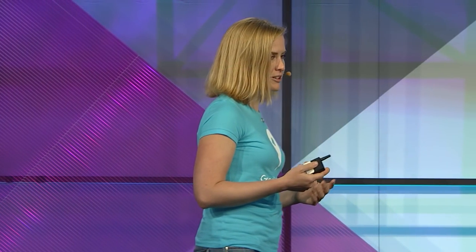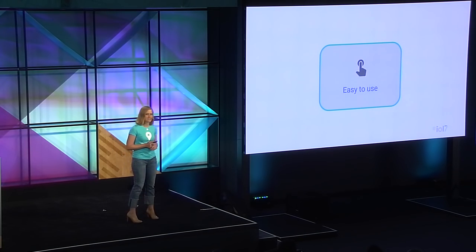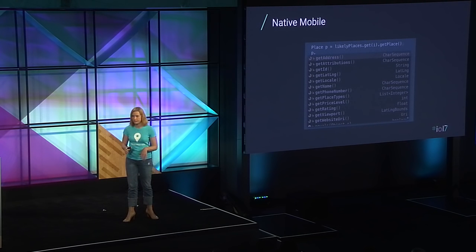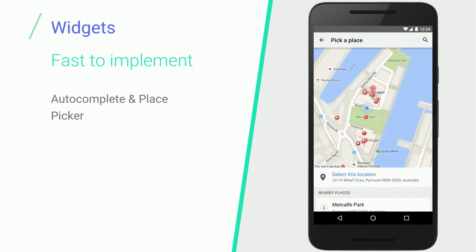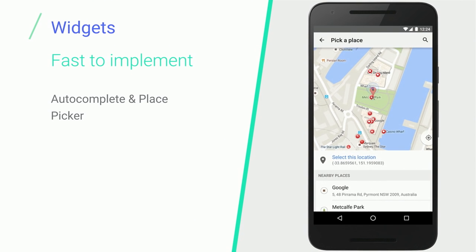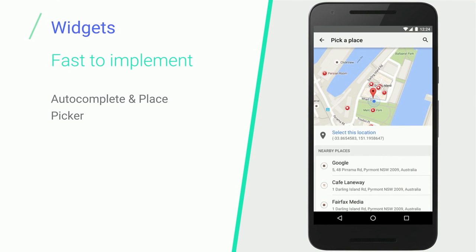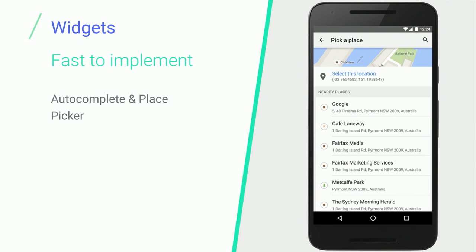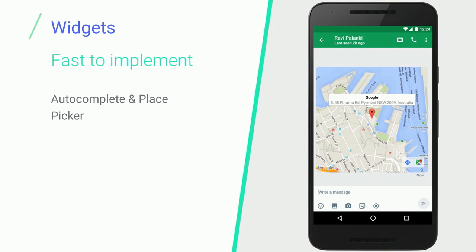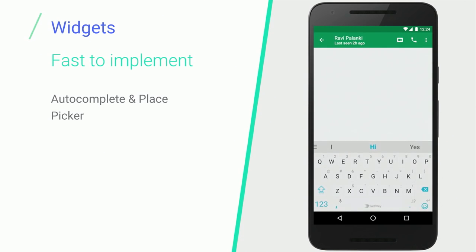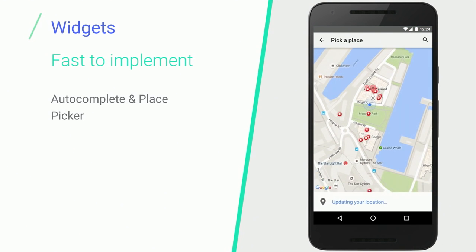Second, our mobile libraries are easier to use. We maintain the place object and create helper methods that make it easy to get different metadata — getName, getReviews, getURL — without having to parse JSON yourself. And then there are the widgets I mentioned: Autocomplete and Place Picker provide not just the API logic but also the UI elements. These are controls common to many apps, so why reinvent the wheel with your precious developer cycles? Leave these UI elements to us, plug them into your app, and focus on the things that matter to your business.